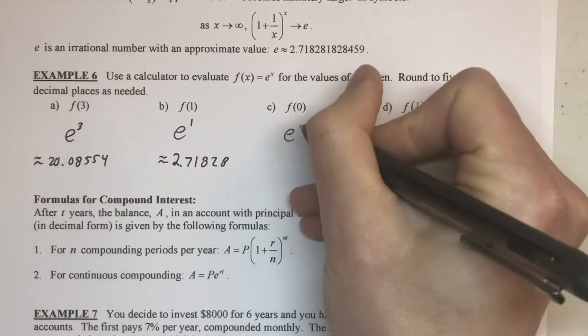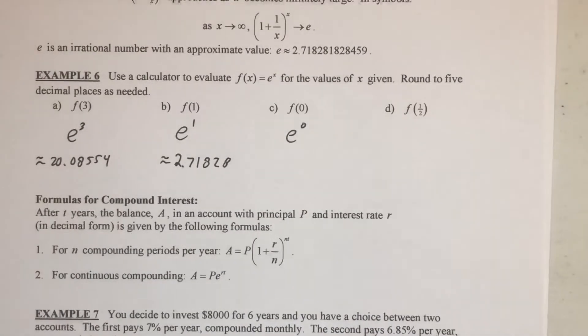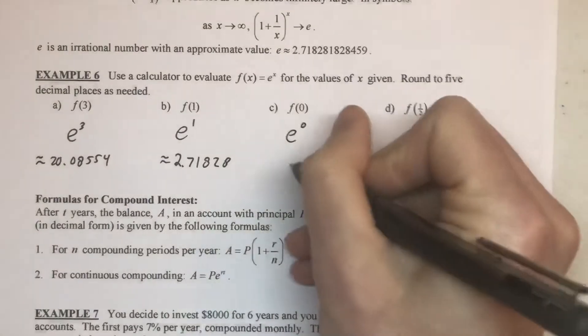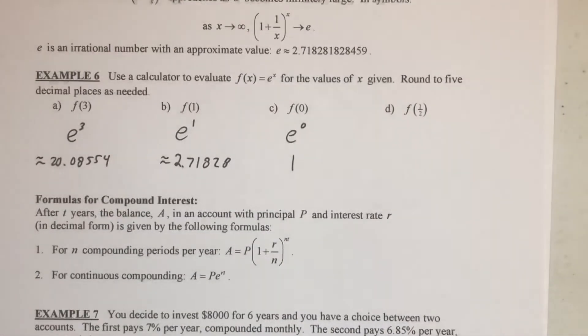Now, what about zero? What about e to the zero? I don't need a calculator for that one because we know any non-zero number to the zeroth power is a 1 immediately.